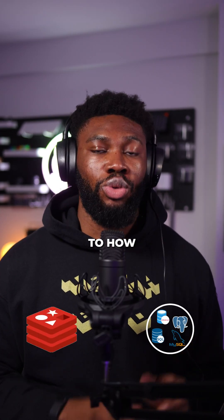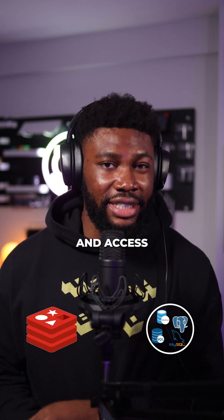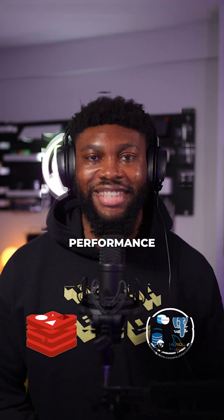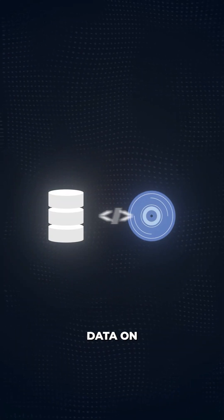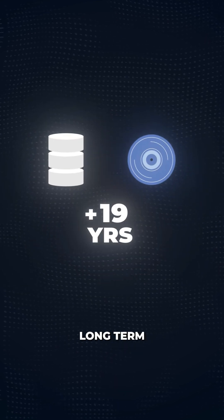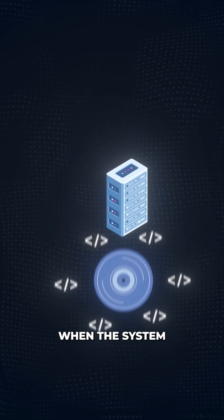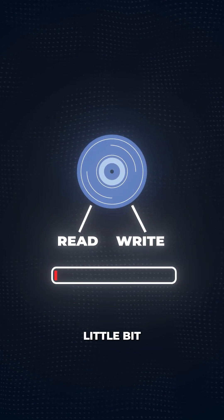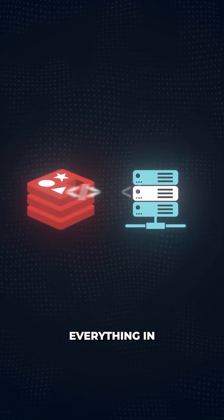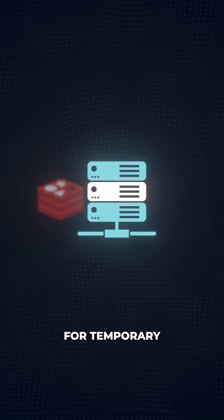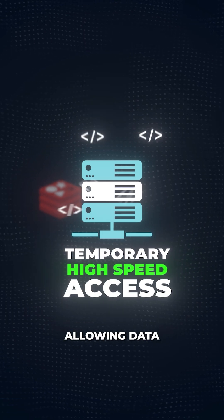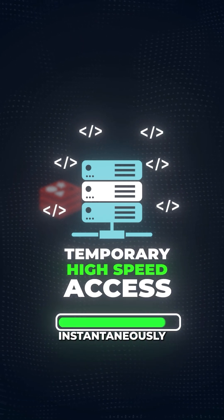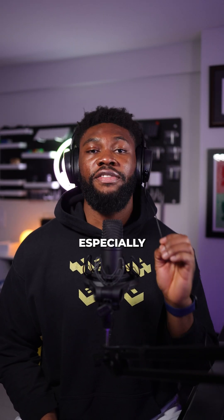The main difference between Redis and a traditional database boils down to how and where the data is stored and accessed, which directly impacts performance. Most traditional databases store data on the disk, which is designed for long-term storage and retains data even when the system is turned off. This means reading and writing data from the disk can be a little bit slow. Redis, however, stores everything in RAM — a memory unit designed for temporary high-speed access — allowing data to be written or read almost instantaneously. This speed is especially valuable in scenarios where performance is critical.